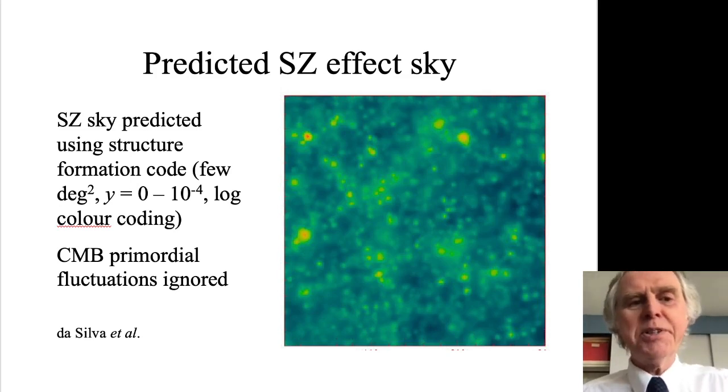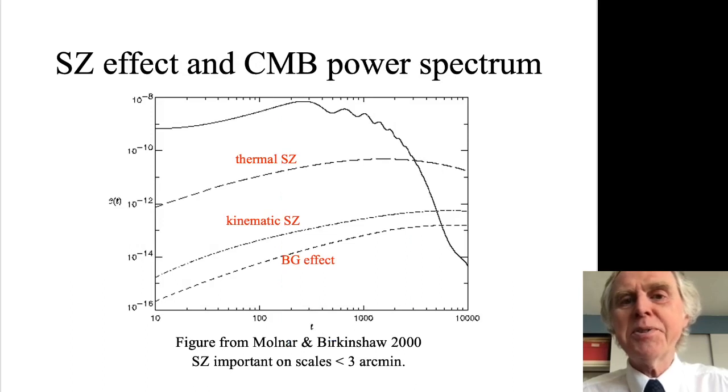I talked about primordial fluctuations from the point of view of power spectrum. Let's do the same thing for the SZ effect. The upper solid line shows the power spectrum of primordial fluctuations, structure forming fluctuations. Below it in dashed lines, you see the thermal SZ effect, which is what I've just been describing. Below that is the kinematic SZ effect.